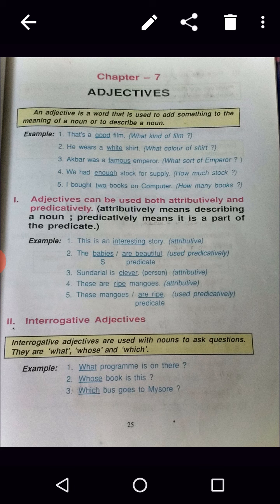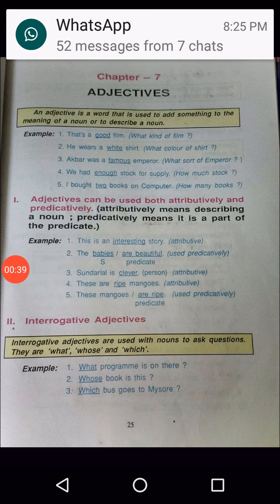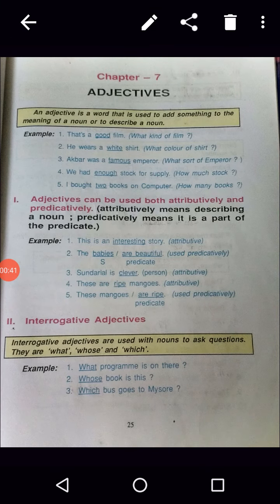See the second example: He wears a white shirt. What color of shirt? The color is white. Then, Akbar was a famous emperor. What sort of emperor? Famous. Like so, these are the adjectives.